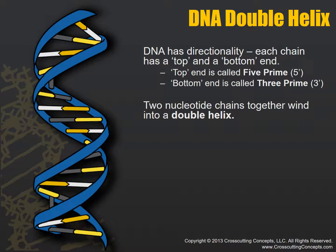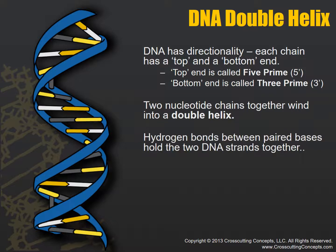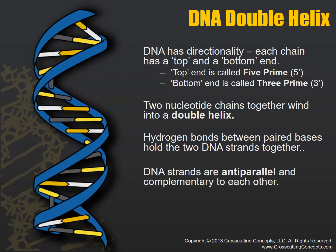The two nucleotides wind together into a double helix. Hydrogen bonds between the paired bases hold those two strands together — just like there are hydrogen bonds in water. The strands are anti-parallel, meaning they move in opposite directions of each other. So one strand will have a five prime at top and three prime at bottom, while the other has three prime at top and five prime at bottom. They are anti-parallel.